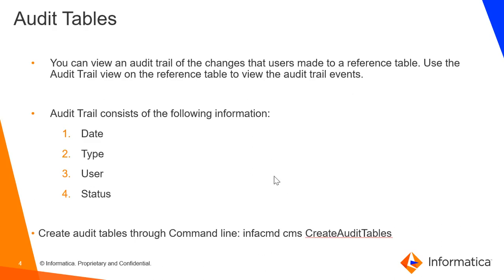When we add or remove values from a reference table, the changes are audited in tables called audit tables. These audit tables consist of the following information: the date when the change has been made, what is the type of change such as add, delete, or change in a data value, who is the user who made the change, and what is the status of that change. We can create the audit tables either from the command line or from the admin console.